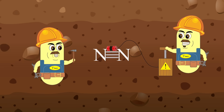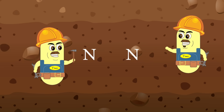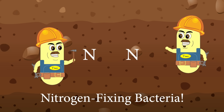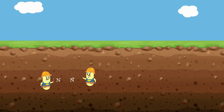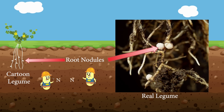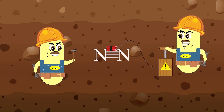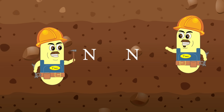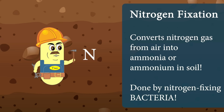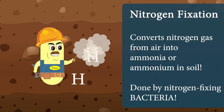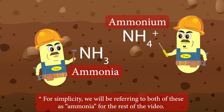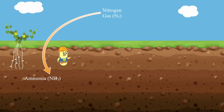Luckily, there are certain bacteria that can break the triple bond of nitrogen gas to make something that organisms can use. These bacteria are called nitrogen-fixing bacteria, and they are found in the soil and in root nodules of certain plants known as legumes, as well as a few other places. These nitrogen-fixing bacteria break nitrogen gas apart and add hydrogen atoms to it to form ammonia, NH3, or ammonium, NH4+. This process moves nitrogen from the air to the soil, and is called nitrogen fixation, because the nitrogen in the air is getting fixed so that other living things can use it.